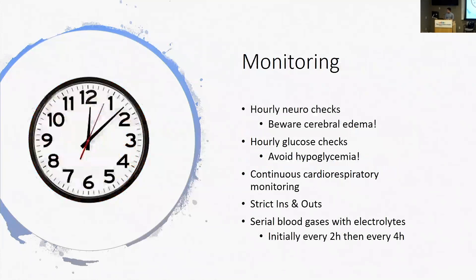For monitoring: all DKA patients get hourly neurochecks to assess for signs of cerebral edema, which is the most important potential complication. Hourly glucose checks to avoid hypoglycemia — have a clear conversation with your team about goal glucose levels. Continuous cardiorespiratory monitoring, strict intake and output to ensure adequate fluid correction, and serial blood gases to follow acidosis and electrolyte corrections.